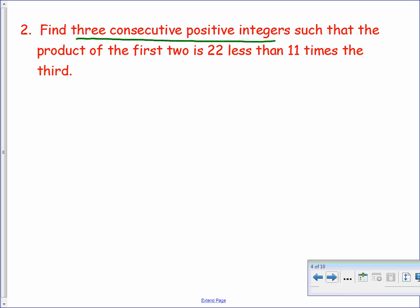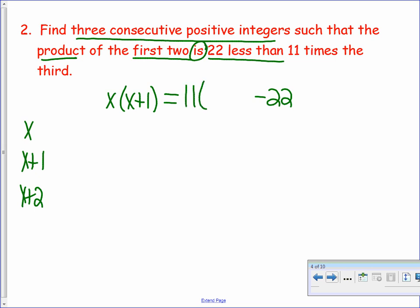Three consecutive positive integers. These are not even or odd, so I'm just going to make a list. x, x plus 1, and x plus 2. Those are my consecutive positive integers. All right, now let's write our equation. The product, we're multiplying, of the first two. So if I multiply x times x plus 1, it is 22 less than, so I'm subtracting 22 from something, subtracting 22 from 11 times the third. So 11 times the third is x plus 2. So there's our equation.